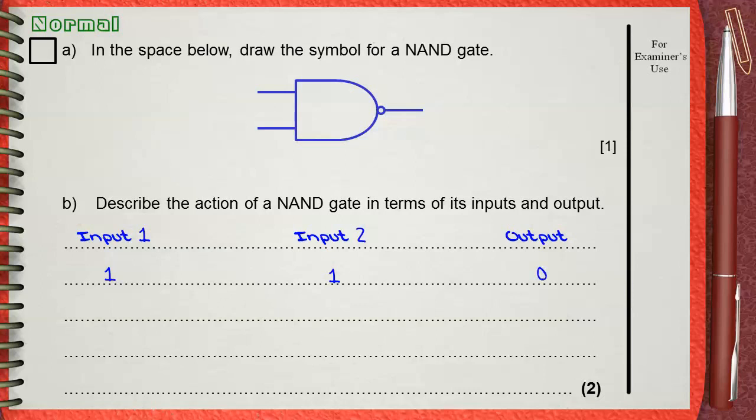Remember that the output of a NAND gate is opposite to the AND gate. Input 1 is 1 and input 2 is 0. If this was an AND gate, the output would be 0. That's why the output for a NAND gate will be 1.